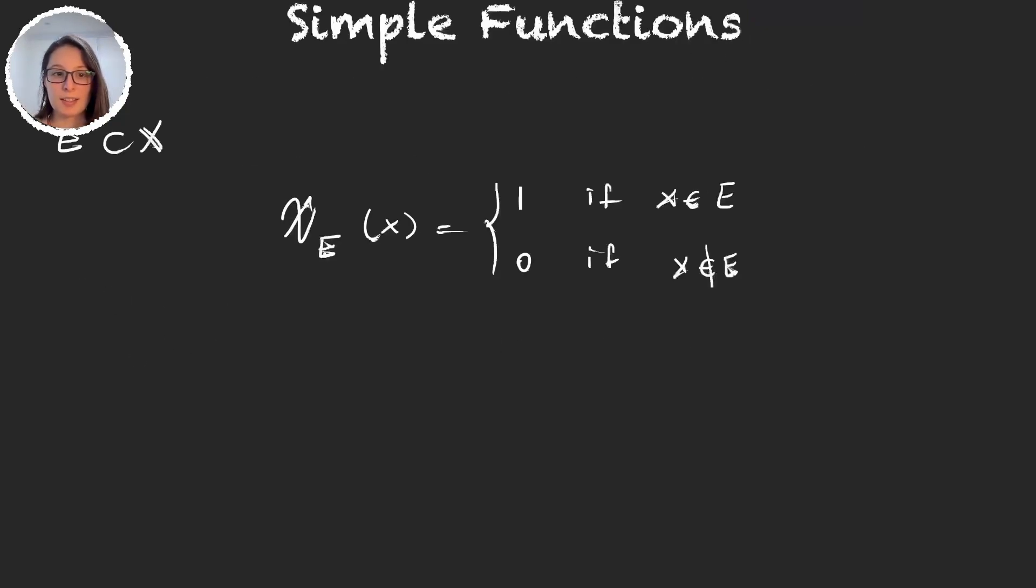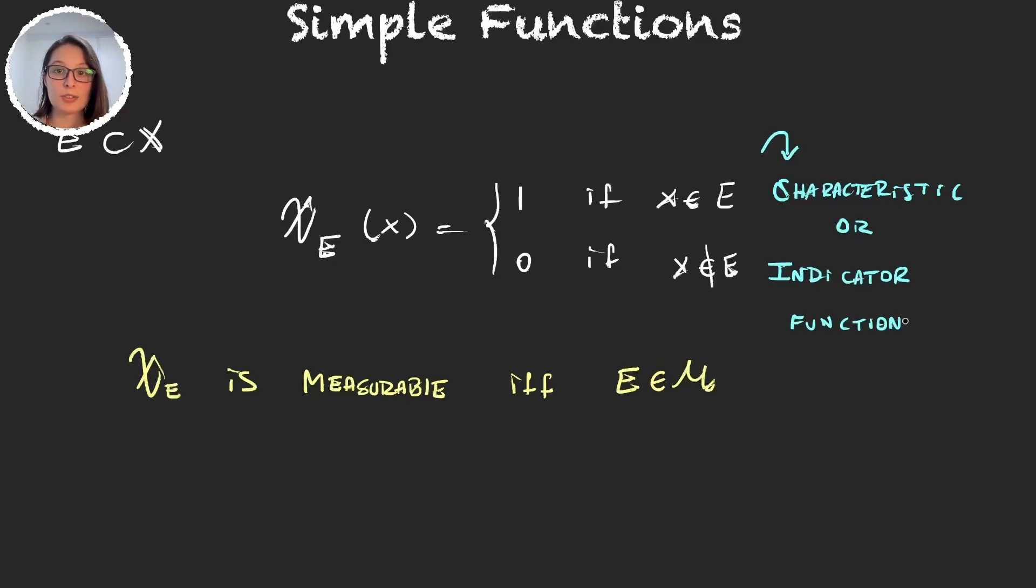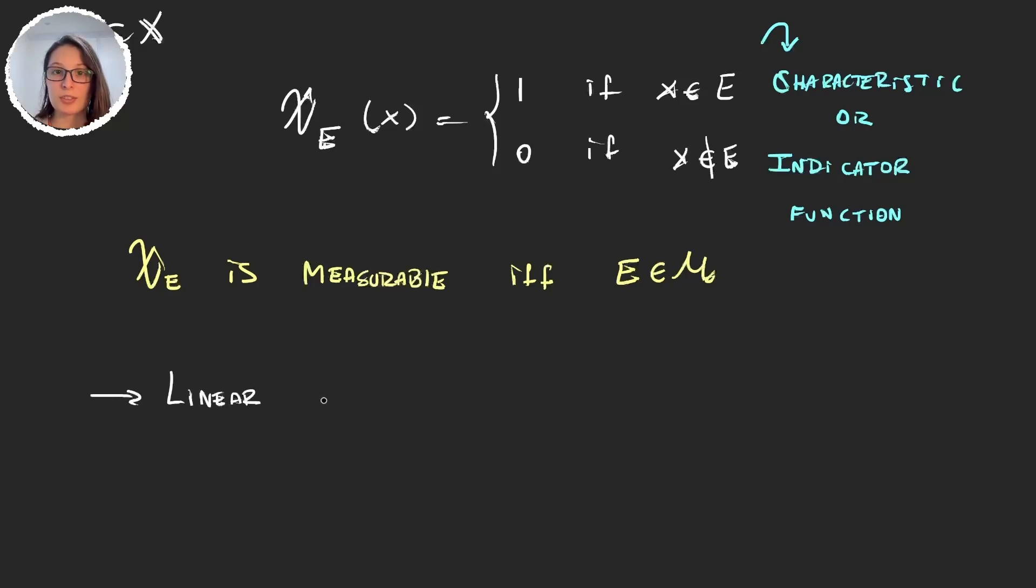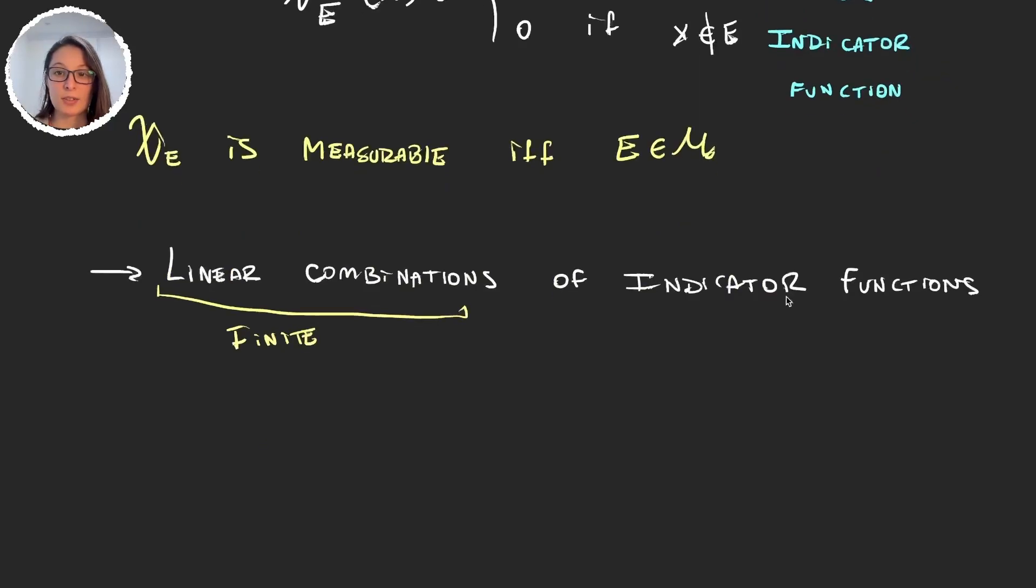It's very easy to see that χ on some set E is measurable even only if the set itself is measurable. Now these functions, as I said, are called characteristic or indicator functions. Well, simple functions are just linear combinations of indicator functions.